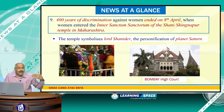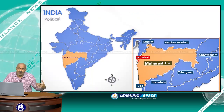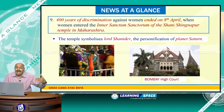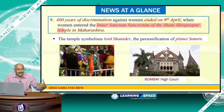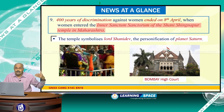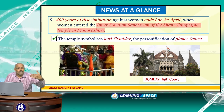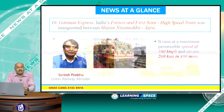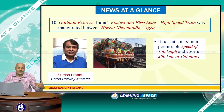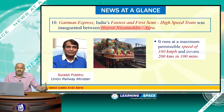400 years of discrimination against women ended on 8th April when women entered the inner sanctum sanctorum of Shani Shingnapur Temple in Maharashtra, based on a Bombay High Court order. Women entered the inner sanctum of this temple, which symbolizes Lord Shanidev, the personification of planet Saturn.